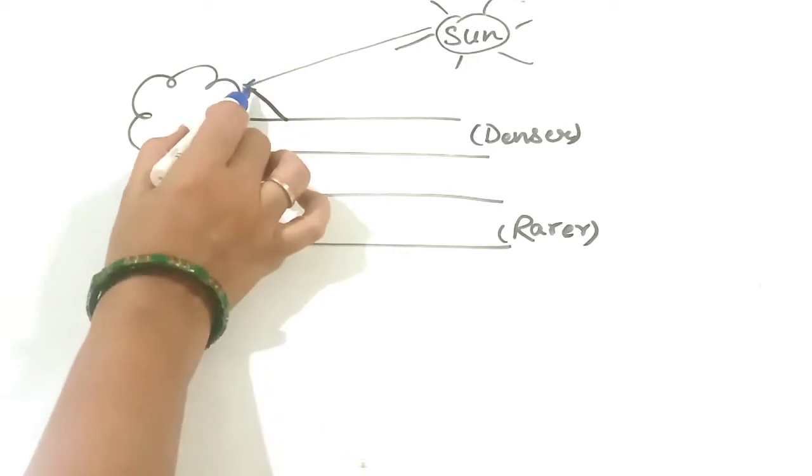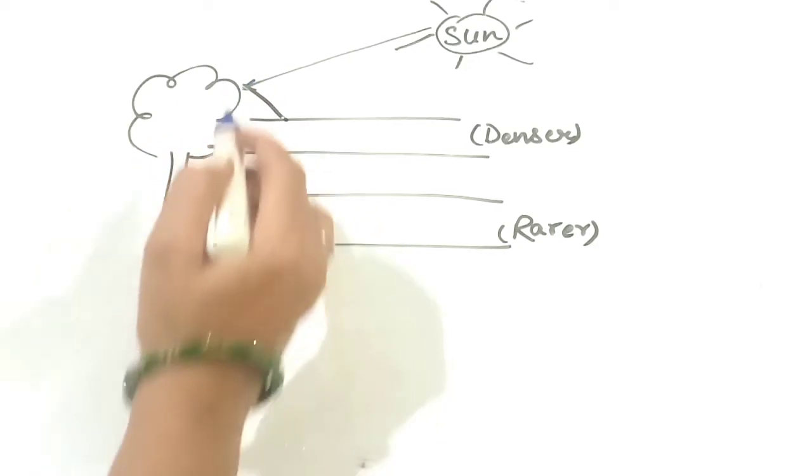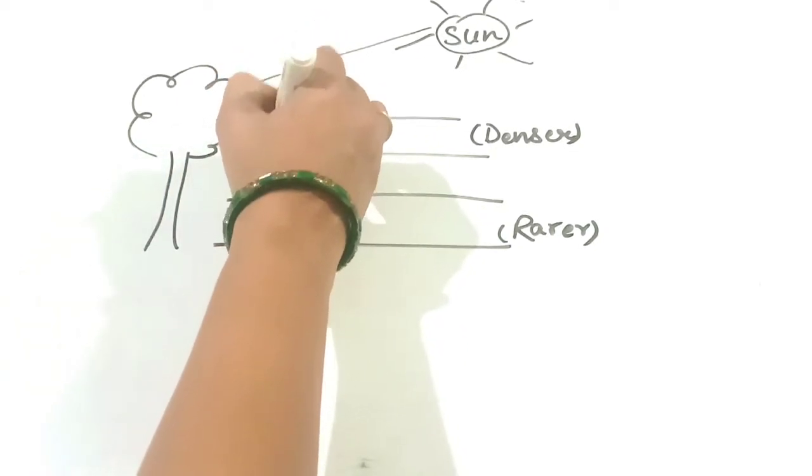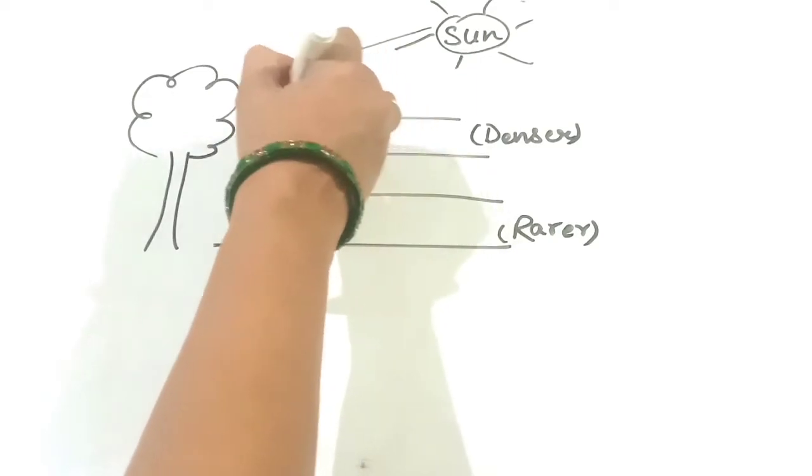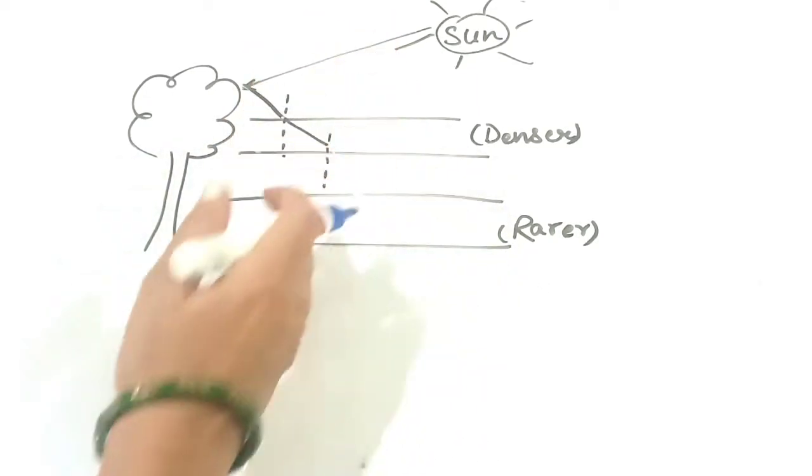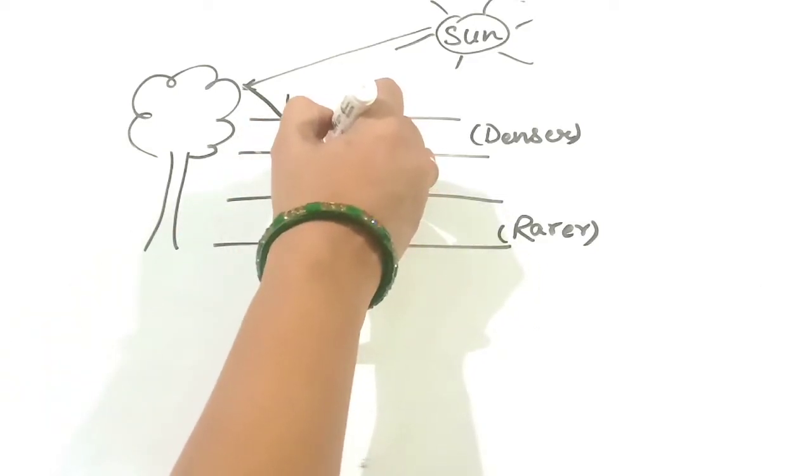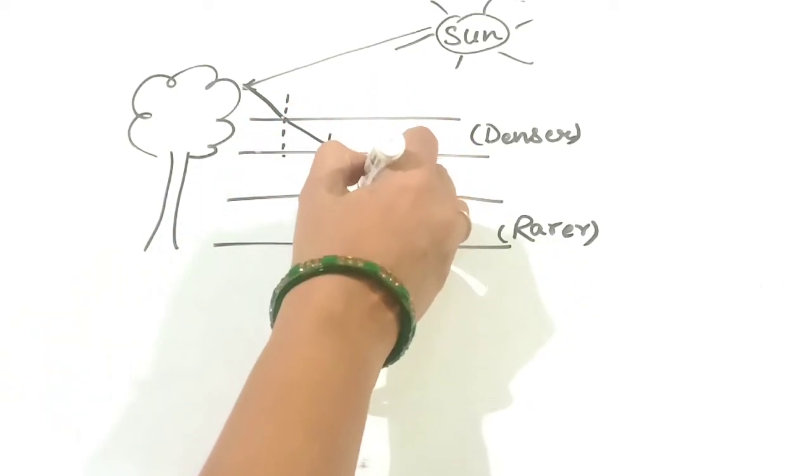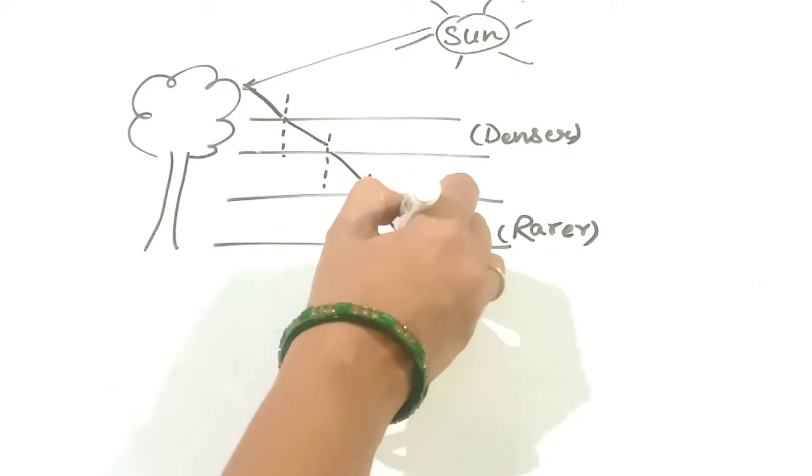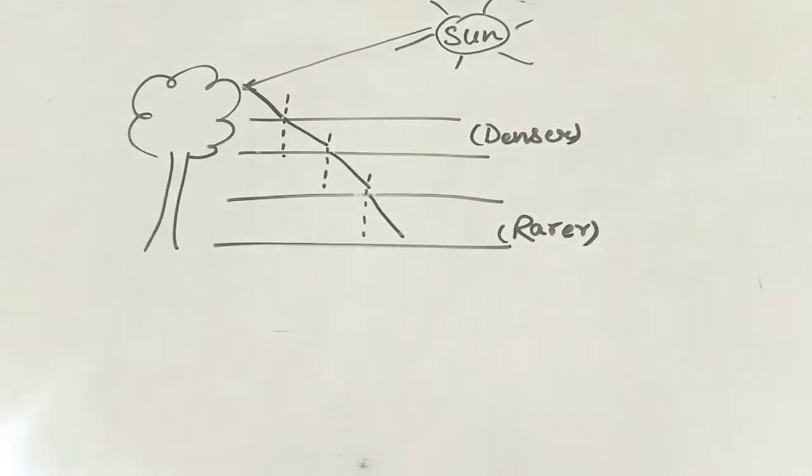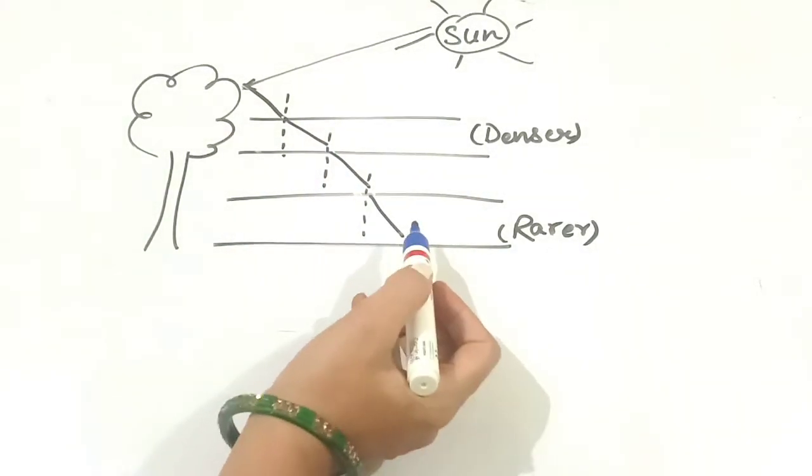As it moves from the denser to the rarer medium, it moves away from the normal. In each successive layer, it continues to move away from the normal. But a point will come when the angle exceeds the critical angle, meaning the angle of incidence becomes greater than 90 degrees.